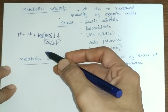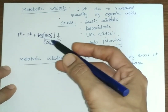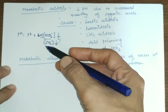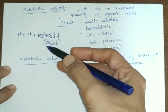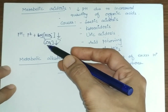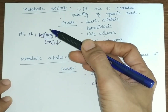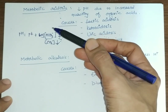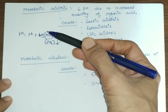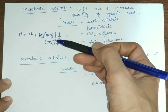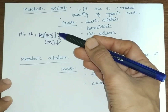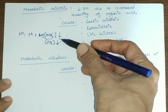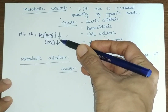Renal compensation of metabolic acidosis is a slow process but more powerful and effective. Because H+ ion concentration is elevated in acidosis, the kidneys excrete H+ ions. As H+ ions are excreted, bicarbonate ions are reabsorbed, so HCO3⁻ concentration increases in renal compensation.